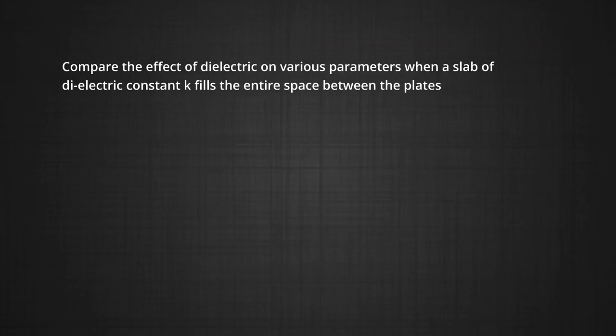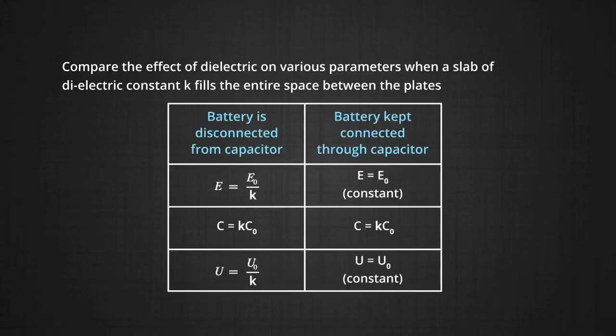Now, let us compare the effect of dielectric on various parameters when a slab of dielectric constant K fills the entire space between the plates. Here in this table, there are two columns: column 1 is for all parameters when battery is disconnected from the capacitor, and column 2 is for when the battery is kept connected. First, let us compare the electric field. When the battery is disconnected, the electric field decreases to E₀ by K, but when the battery is kept connected, the electric field remains the same, that is E₀.